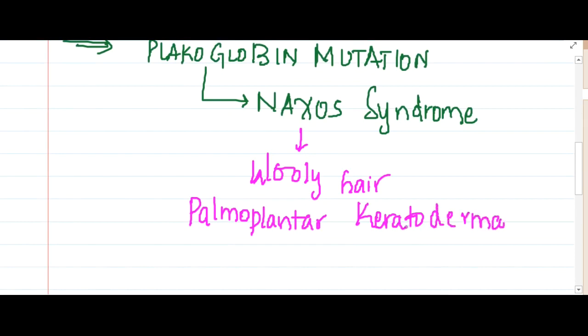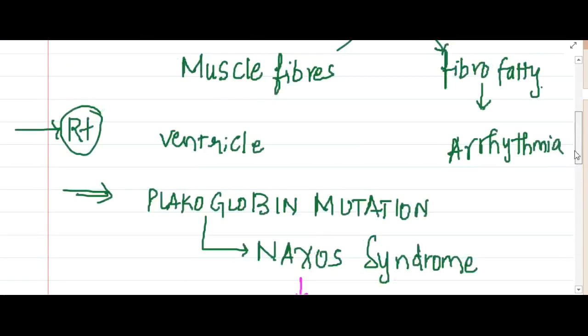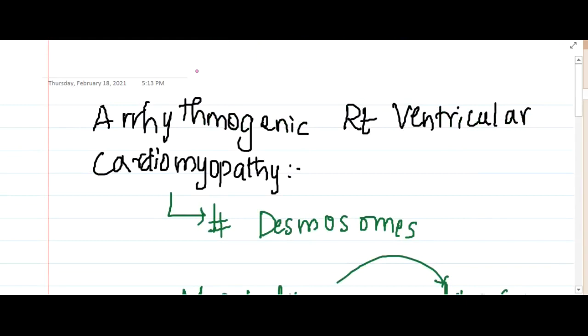That is thick, rough skin in the palms and soles. So these are the main things which you see in Naxos syndrome and arrhythmogenic right ventricular cardiomyopathy.